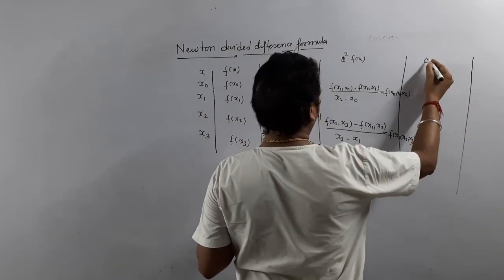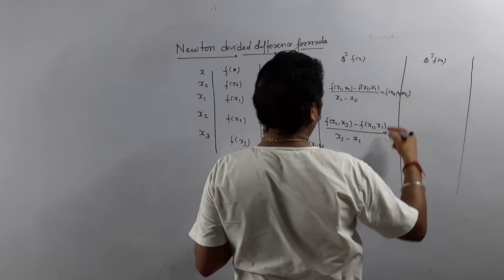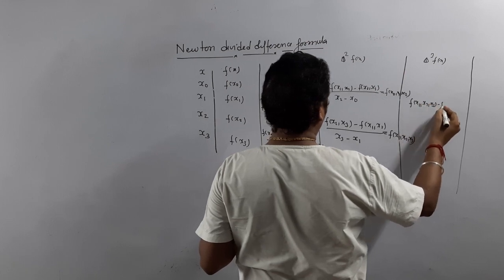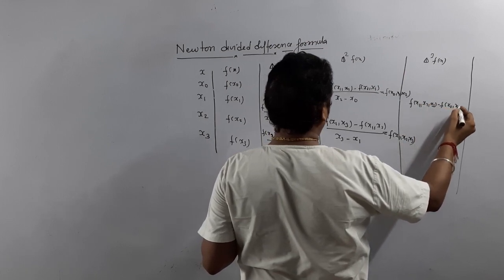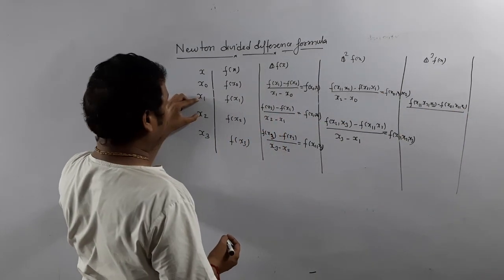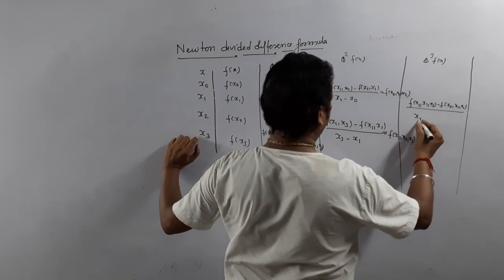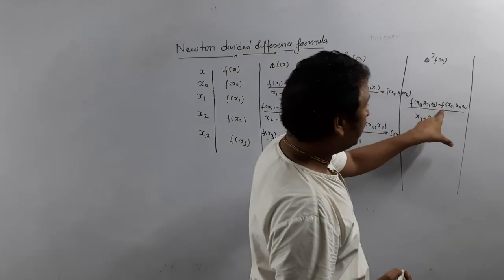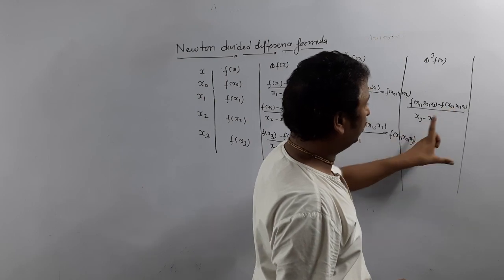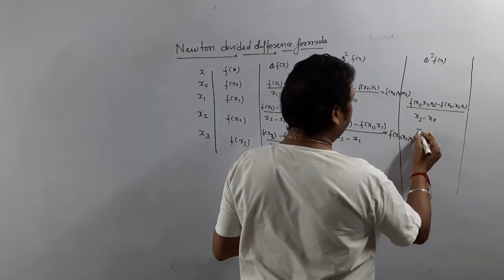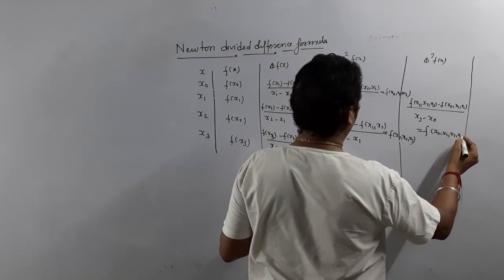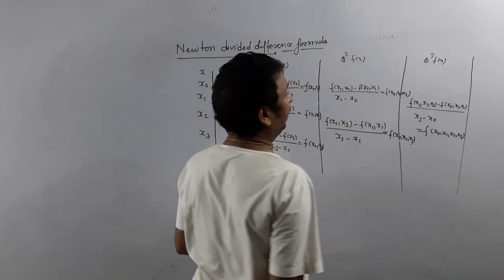For del cube — the third divided difference — this is the difference of: f[x1, x2, x3] minus f[x0, x1, x2], divided by the highest minus the lowest. What is the highest? x3. What is the lowest? x0. So we divide by x3 minus x0, and it is denoted by f[x0, x1, x2, x3]. In that way we can proceed.